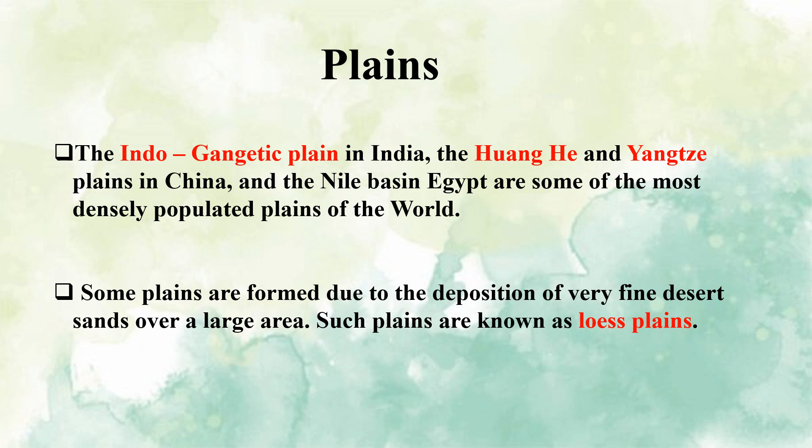The Indo-Gangetic Plain in India, the Huanghe and Yangtze Plains in China, and the Nile Basin in Egypt are some of the most densely populated plains of the world. Plains are suitable for human settlement. Some plains are formed due to the deposition of very fine desert sands over a large area; such plains are known as Loess Plains.